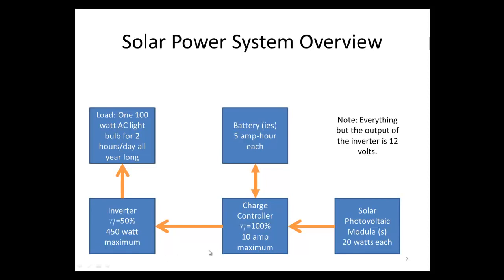In our system, we also have something called a charge controller. What a charge controller does is make sure that the battery is not too overloaded or too drained, because batteries don't like to be overcharged or undercharged. It's really the decision maker of the solar power system. We're going to use 100% efficiency for the charge controller — normally it's around 80% to 90%, but for simplicity we'll use 100%. The charge controller provides a maximum of 10 amps.